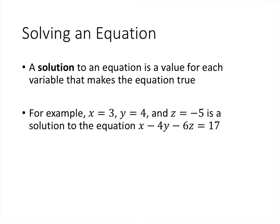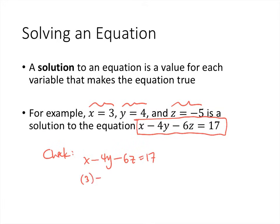Now that we know what a linear equation is, what does it mean to find a solution to a linear equation? All that means is that we have a value for each variable that makes the equation true. In this case we have the equation x minus 4y minus 6z equals 17, and we're given a solution x equals 3, y equals 4, and z equals negative 5. We can check this solution by plugging in those values for our variables in our equation. So we put in 3 for x, 4 for y, and negative 5 for z, and we check does that really equal 17. We get 3 minus 16 plus 30, which is negative 13 plus 30, which is indeed 17, so that means this is a solution. That doesn't mean it's the only solution. There may be many solutions to these equations, but this is at least one of the solutions.